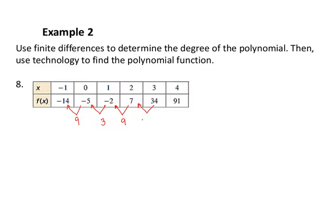So I like to show this with an arrow to say that I'm taking negative five minus negative 14, which is nine. Negative two minus negative five is three. Seven minus negative two is nine. Thirty-four minus seven is 27. Clearly the first set of differences did not come out equal. So that just tells us it's not linear. It's not a first-degree polynomial.